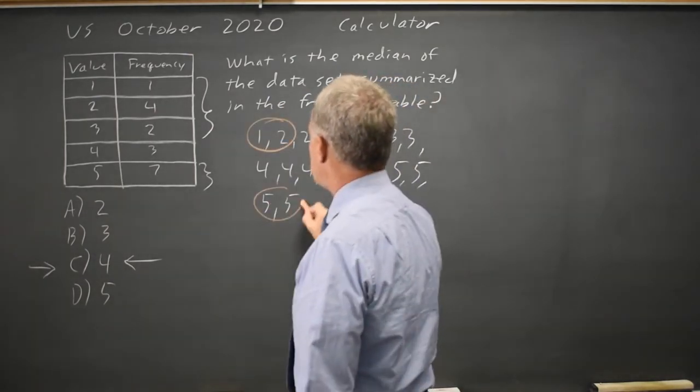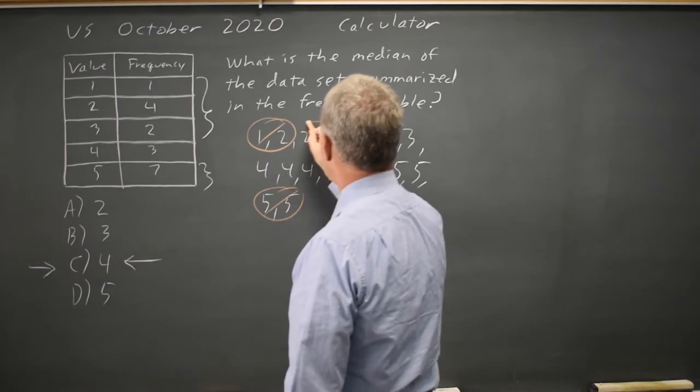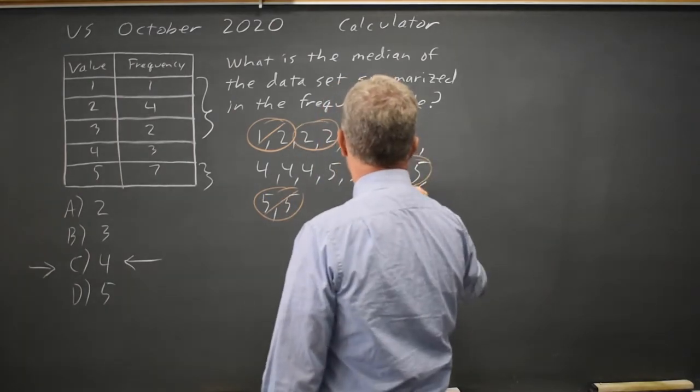And if I pick the two largest and two smallest, I can cross those out. If I pick the next two largest and next two smallest, I can cross those out.